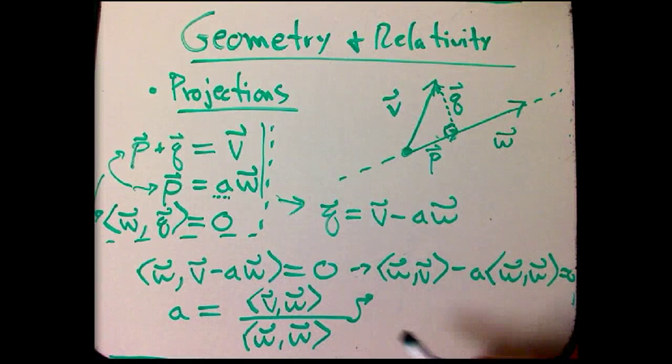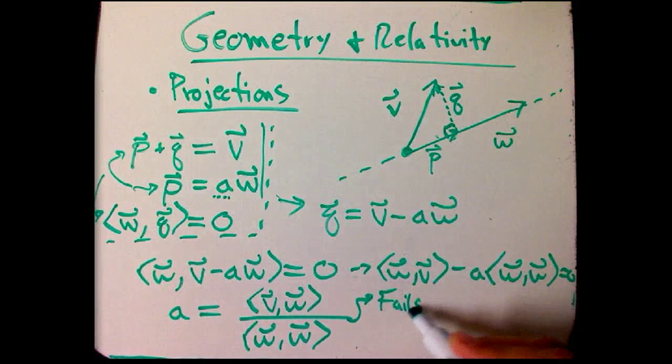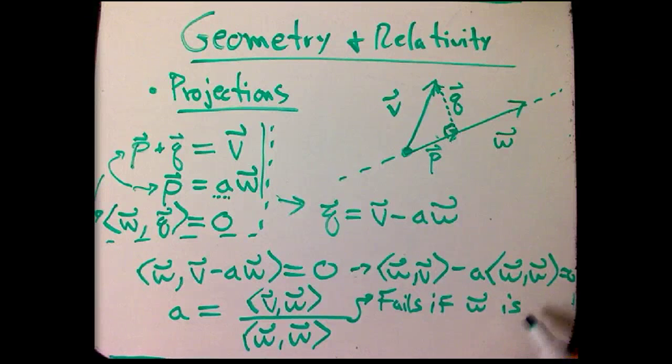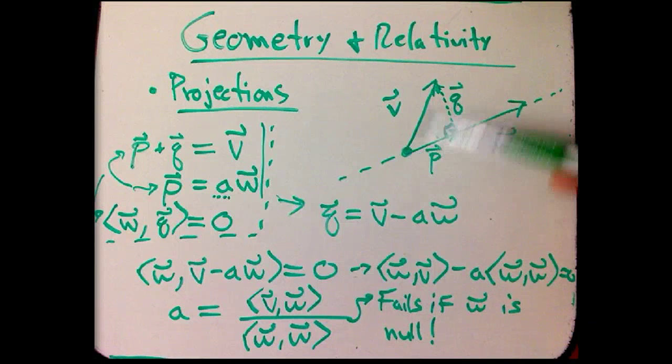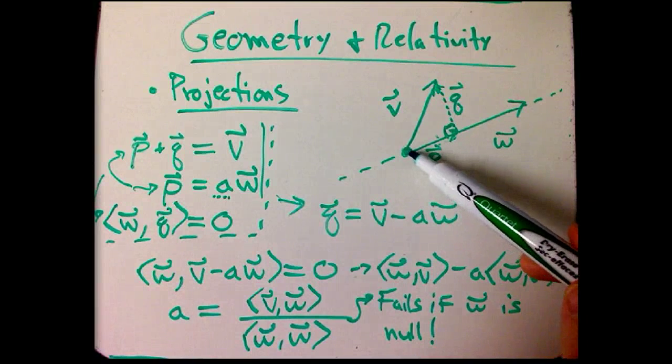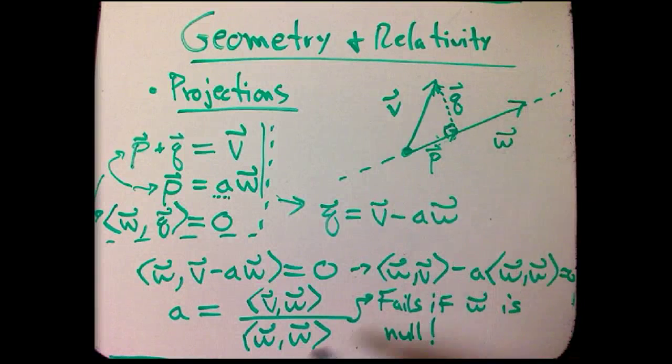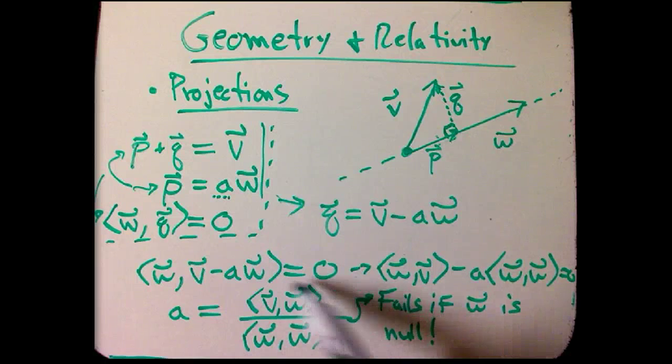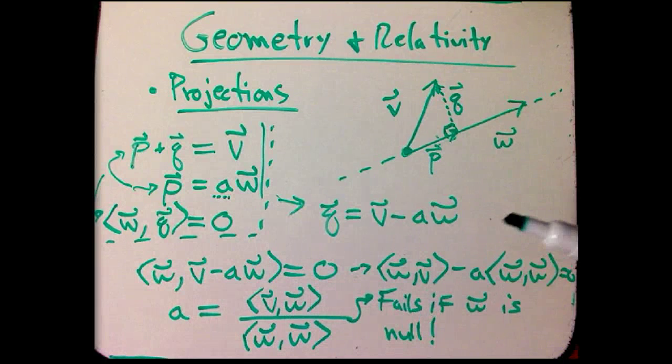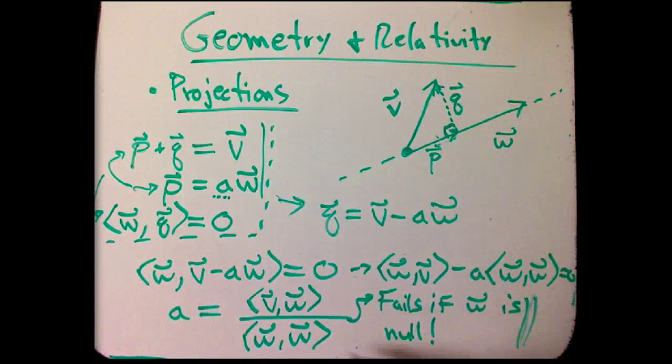One thing to notice right away here is that this fails if W is a null vector. Now, the only way that can fail in Euclidean geometry is if W is actually zero. And if you think, if the W is the zero vector and then I say project V onto the line defined by W, that doesn't make any sense. A zero vector doesn't define a direction or a line. But in Minkowski geometry, if W is a null vector, that defines a line, but you can't project onto it because null vectors are so funky with regards to orthogonality and the geometry. So this is a very important fact - you can't project onto a null vector in the Minkowski world.